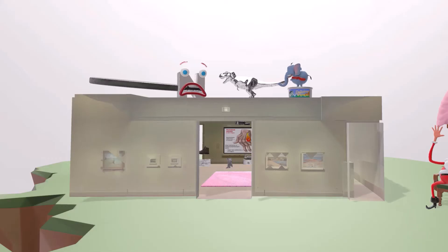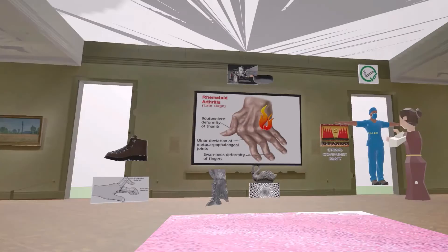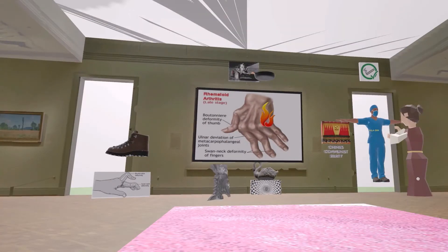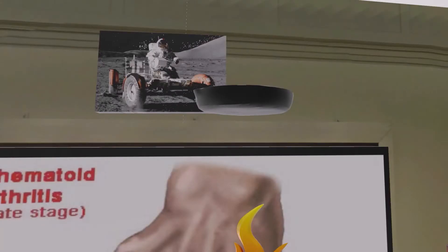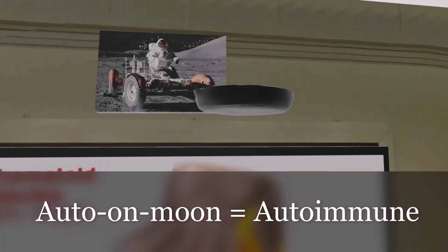Let's begin with the pathophysiology. The first work of art is a photograph of an astronaut in his auto on the moon. The auto on the moon reminds us of 'autoimmune,' which reminds us that rheumatoid arthritis is an autoimmune disease that leads to an inflammatory condition affecting the joints as well as other organ systems.